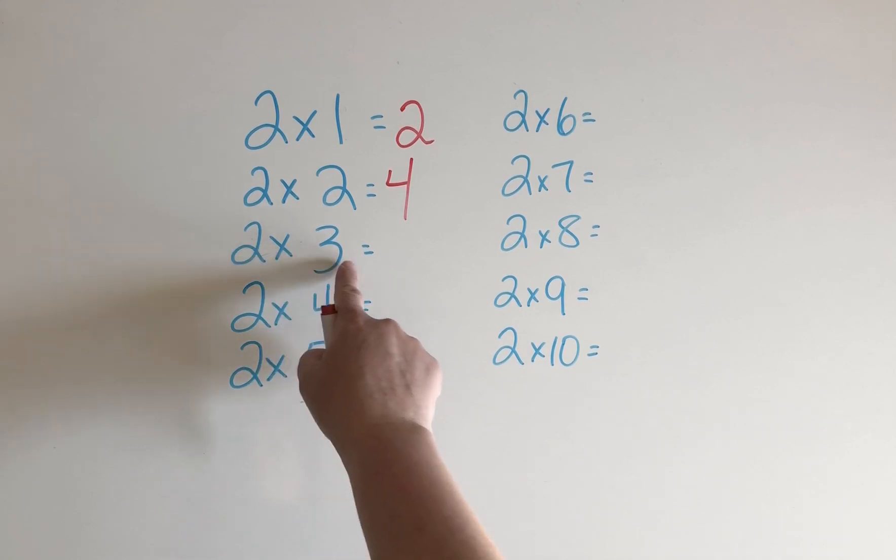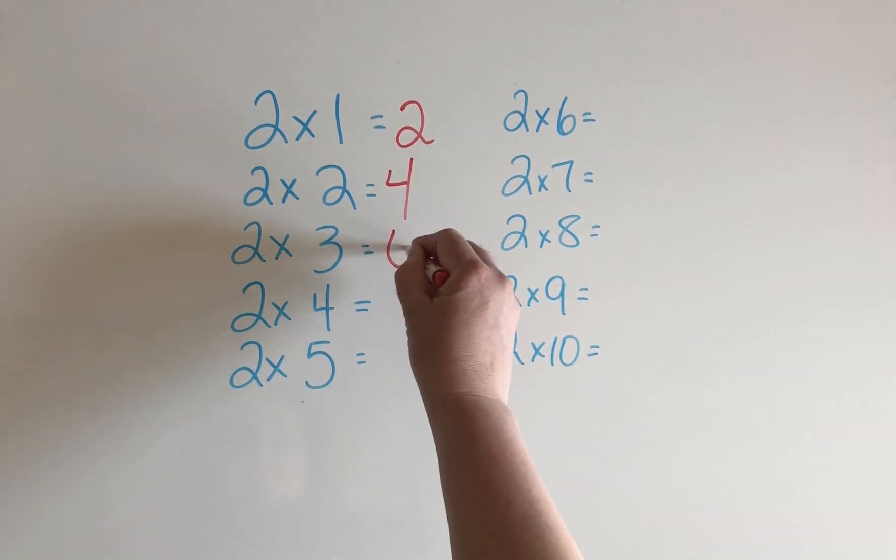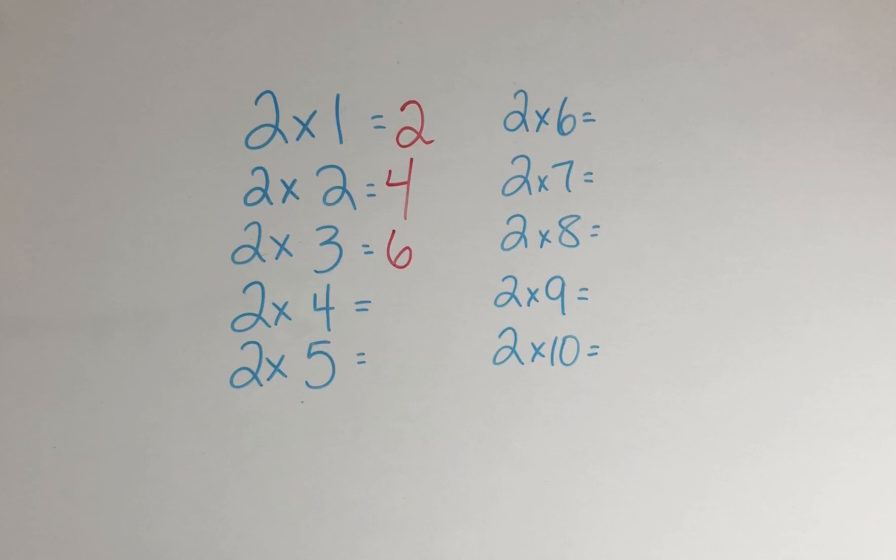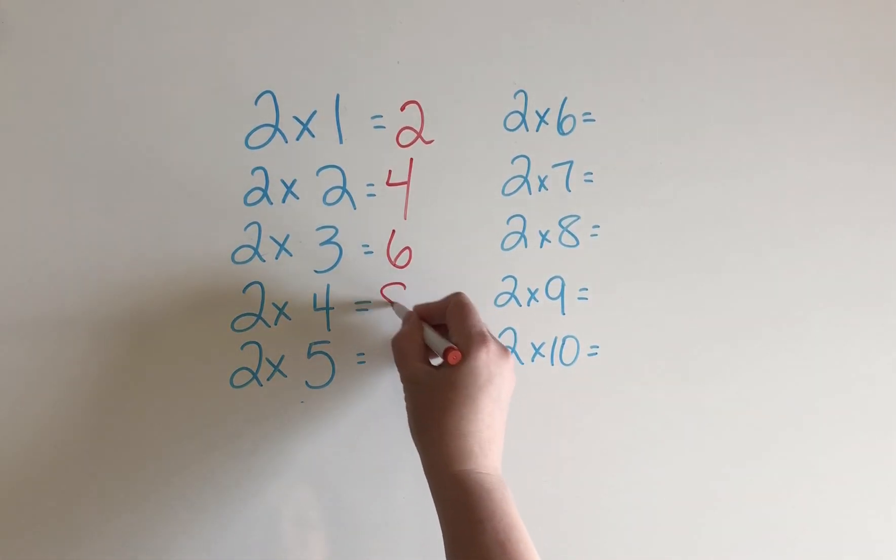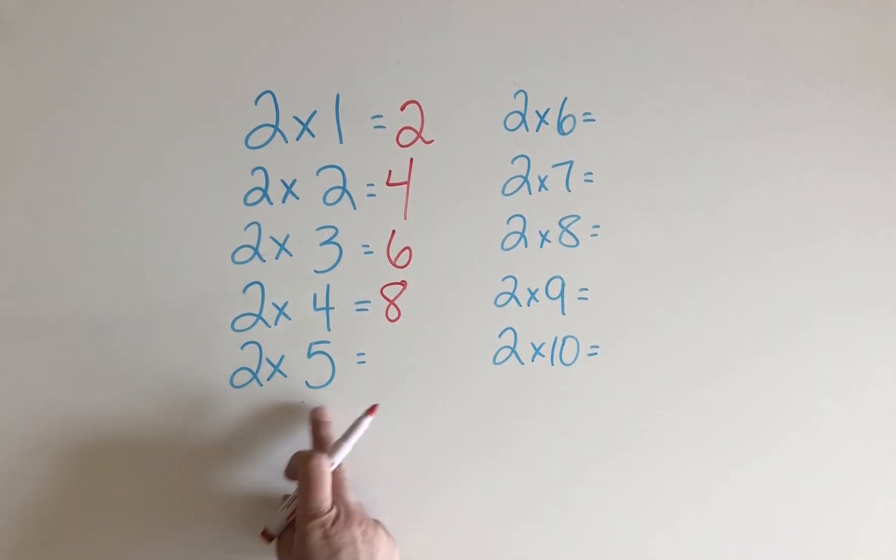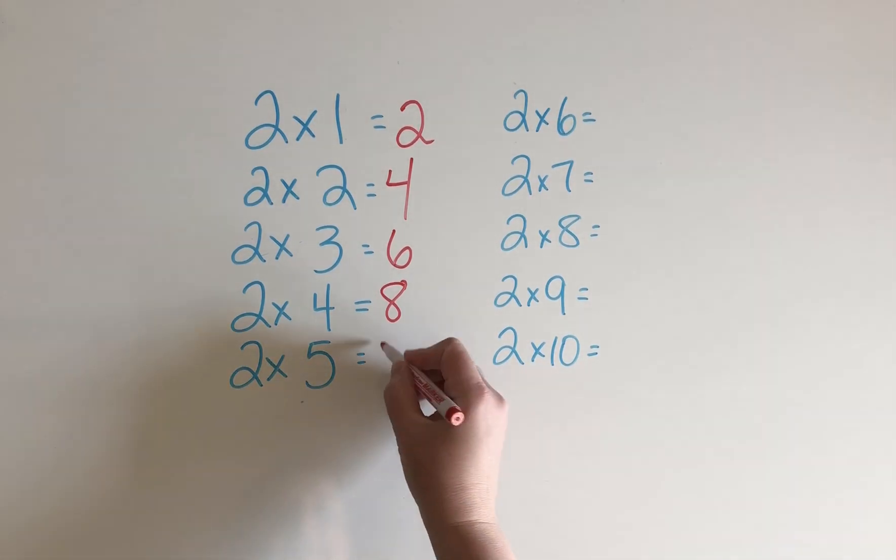2 groups of 3. What's the double of 3? 6. 2 times 4. The double of 4 is 8. 2 times 5. The double of 5 is 10.